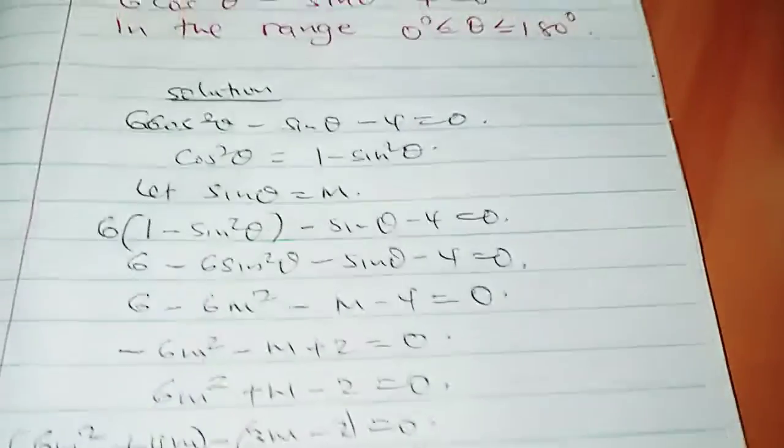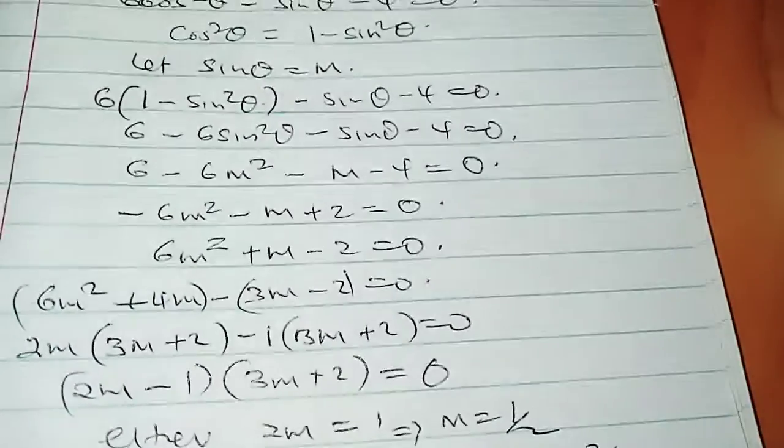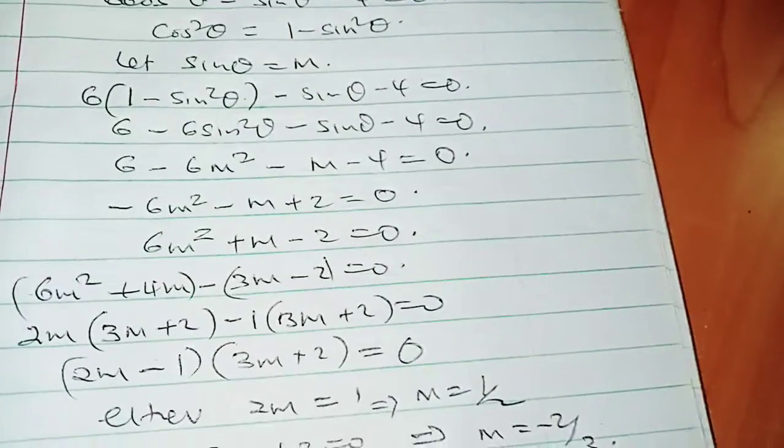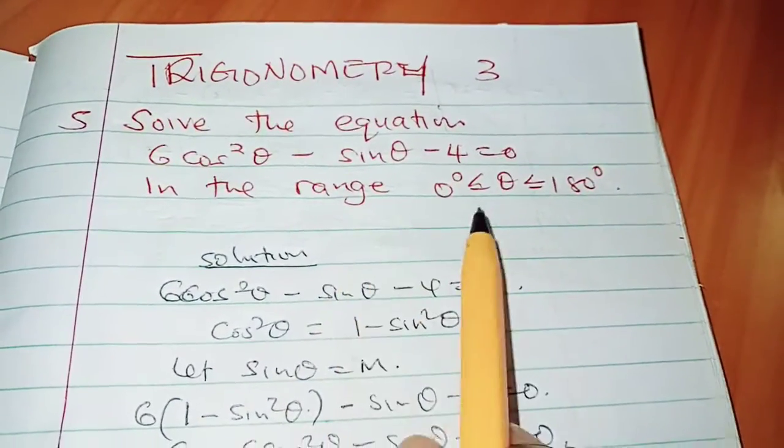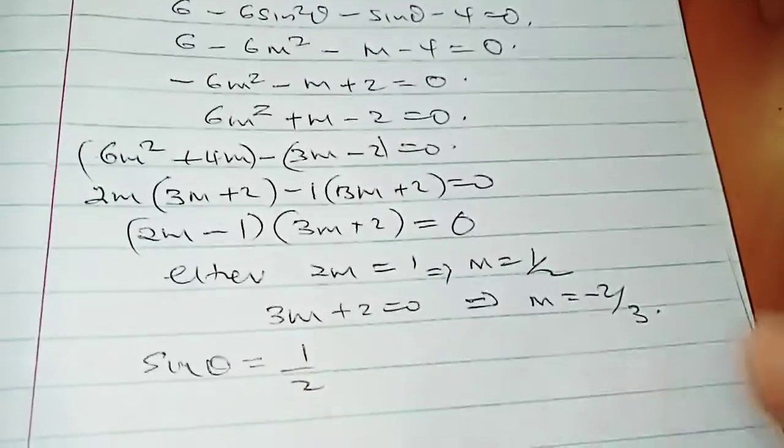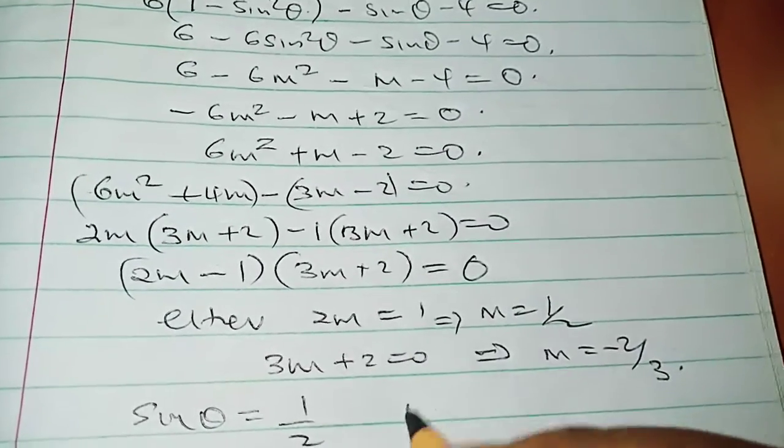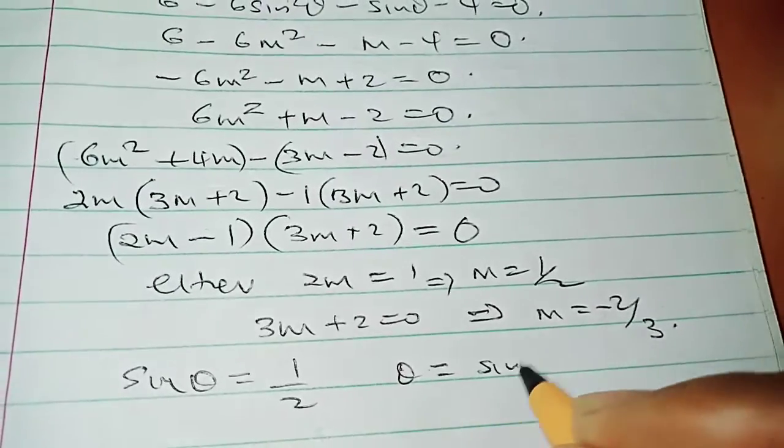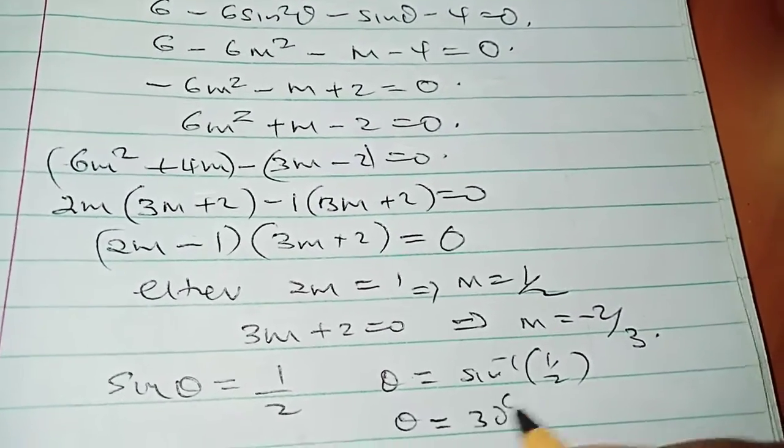Now we have to go back where we said let sinθ be equal to m. And now we determine what that angle is. So we can say that sinθ = 1/2. And we have to be careful because the range says between 0 degrees and 180 degrees. The inverse sin of that will give us the first angle as 30 degrees.